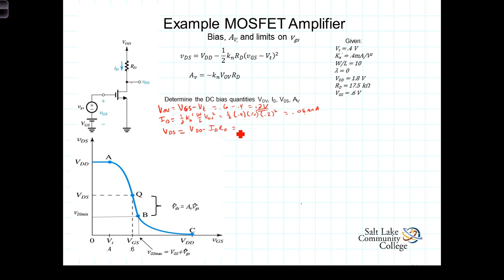And that's going to equal, VDD we're told is 1.8 volts, minus we just calculated the current at minus .08 times R sub D, .08 is in milliamps, so let's put R sub D in kilo ohms, 17.5, and that gives us then .4.